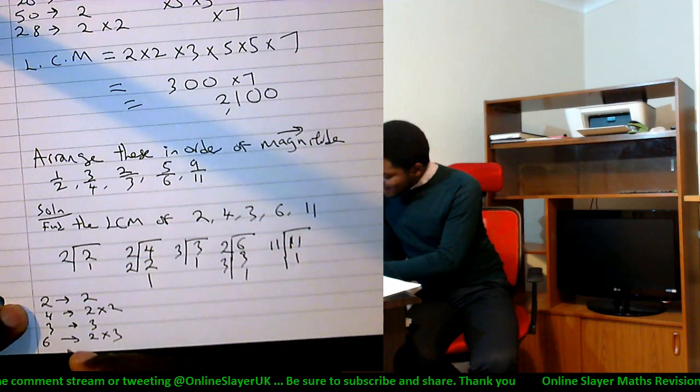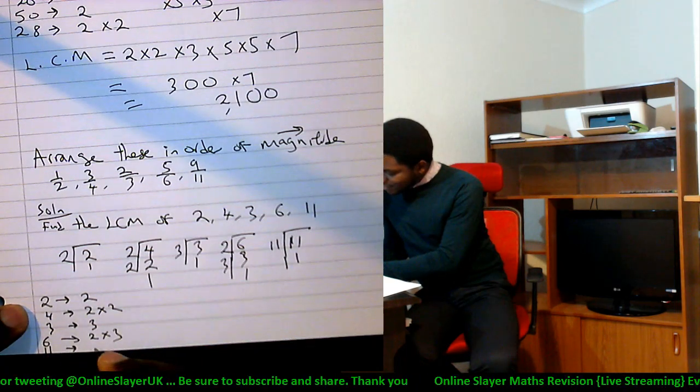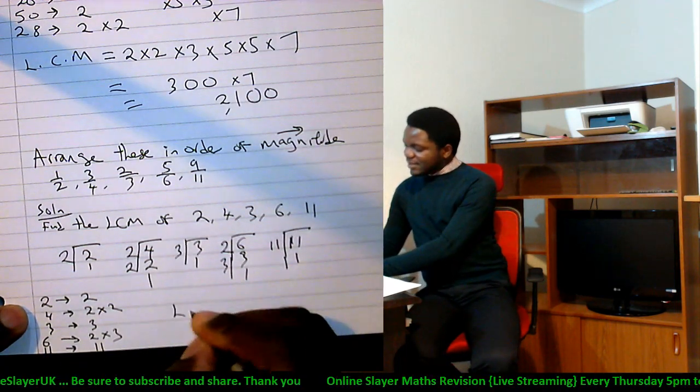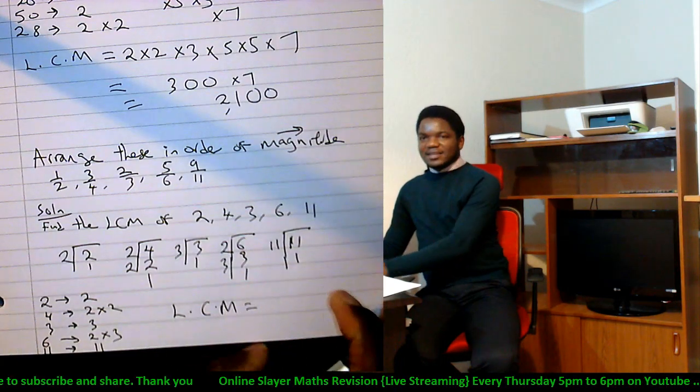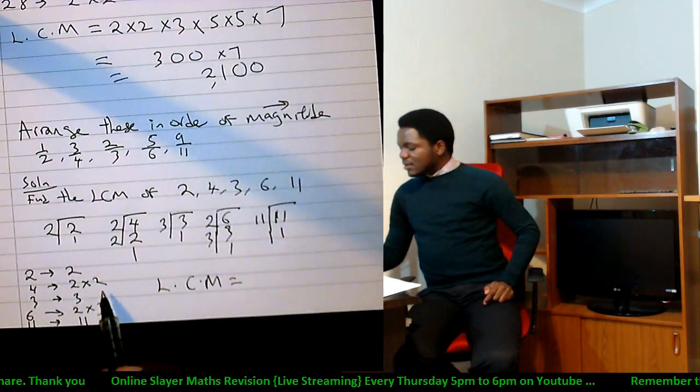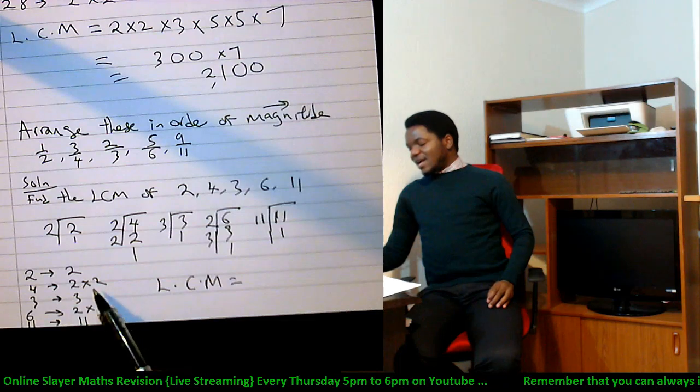So two gives you two, if four gives you two times two, if three gives you three, if six gives you two times three, and eleven gives you eleven. What will be the LCM of these guys? How many, what are the numbers I can see here? I can see two, three...